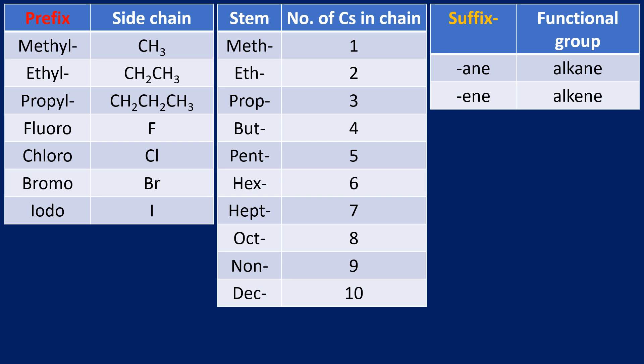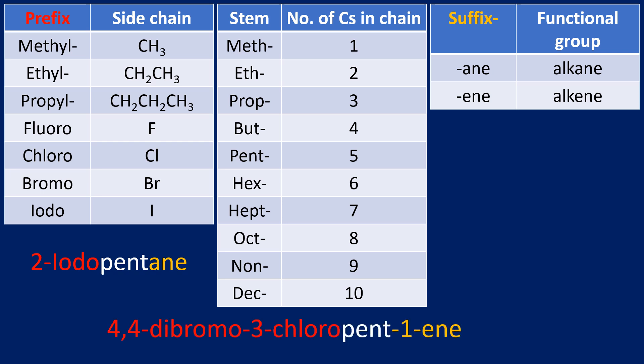Some examples of names: 2-iodopentane — the prefix in red tells us there's an iodine on the second carbon, 'pent' is a five-carbon chain, and it's an alkane. There's also a slightly more complex example we'll look at those two names at the end of the video to see if we can draw them.